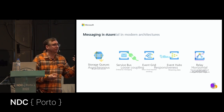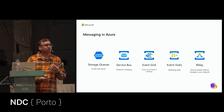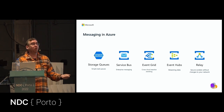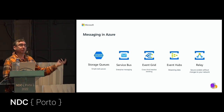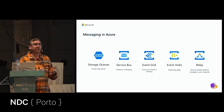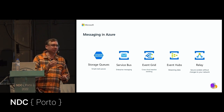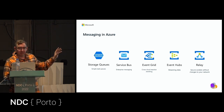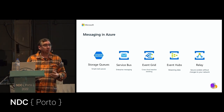In Azure we basically have five different messaging services. First, Storage Queues — really about simple tasks, very scalable but very simple. Then Service Bus, which is the one we're going to talk about today — it has queues and topics and a lot more features than storage queues, making it true enterprise messaging. Event Grid is for eventing, which is different from messaging.